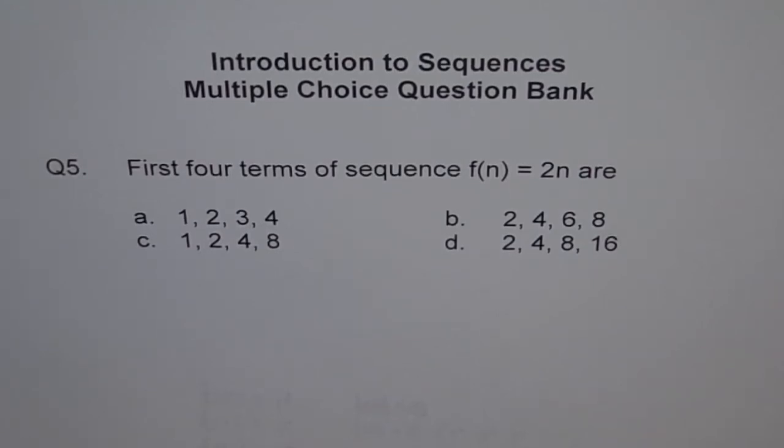Question number five of Introduction to Sequences. You have to write the first four terms of sequence f(n) = 2n. Rather, choices are given to you. Select the right one. Once you have made a selection, move on with the video and see the answer.